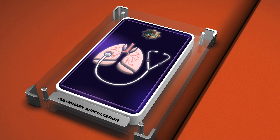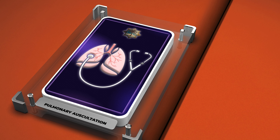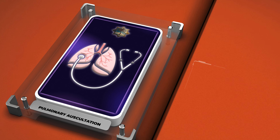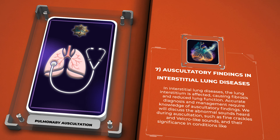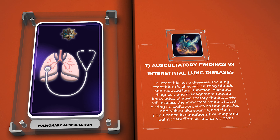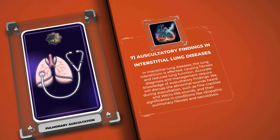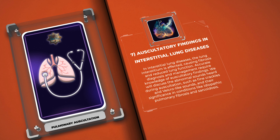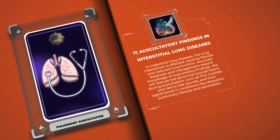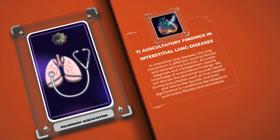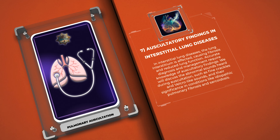In interstitial lung diseases, the lung interstitium is affected, causing fibrosis and reduced lung function. Accurate diagnosis and management require knowledge of auscultatory findings. We will discuss the abnormal sounds heard during auscultation, such as fine crackles and Velcro-like sounds, and their significance in conditions like idiopathic pulmonary fibrosis and sarcoidosis.